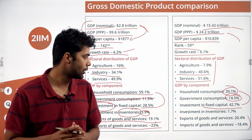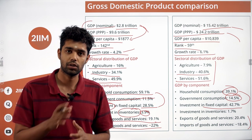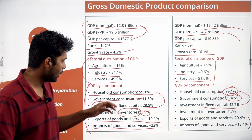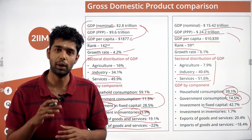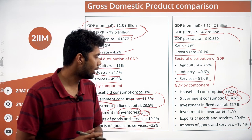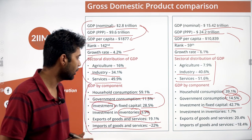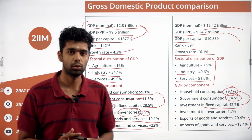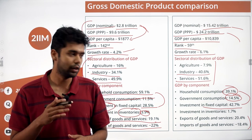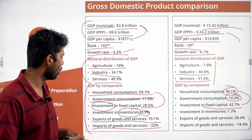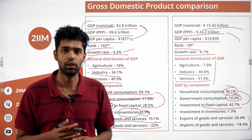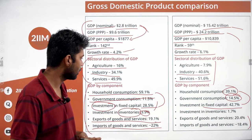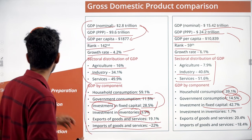The most important difference between India and China's GDP components is the investment in fixed capital — infrastructure and capital goods. India's is 28.5% versus China's 42.7%. China has been investing heavily in fixed capital since the 1980s, which drives better long-term economic activity. India's government, through the 2021 budget, is actively trying to increase investment spending to close this gap.